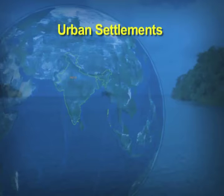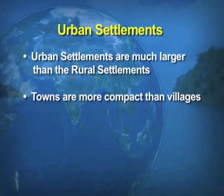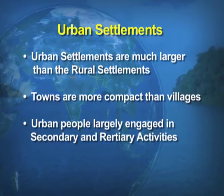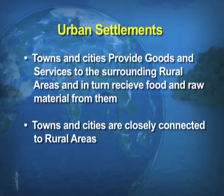What are the urban settlements? They are much larger than the rural settlement. Towns are very compact compared to villages, and urban people are largely engaged in secondary and tertiary activities. Towns and cities provide goods and services to the surrounding rural areas, and in turn they receive food and raw materials from them. Towns and cities are generally closely connected to the rural areas.